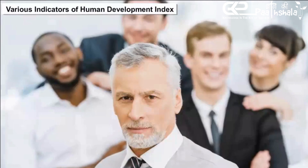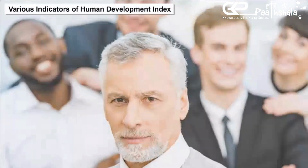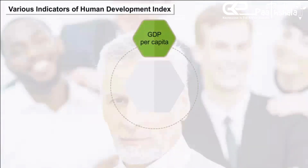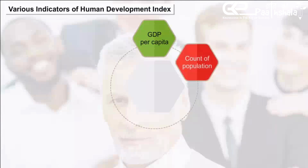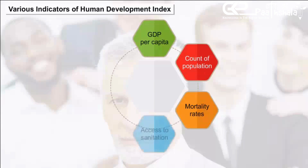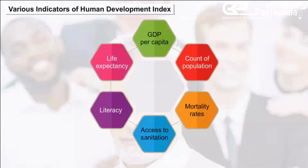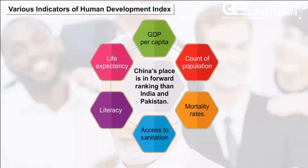Various indicators of the Human Development Index — including GDP per capita, population below poverty line, mortality rates, access to sanitation, literacy, life expectancy, and malnourishment — show that China's ranking is more favorable than India and Pakistan across these measures.